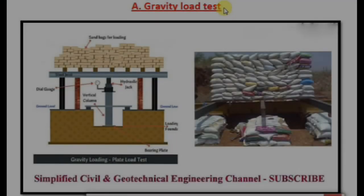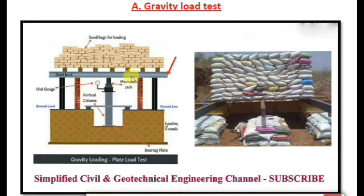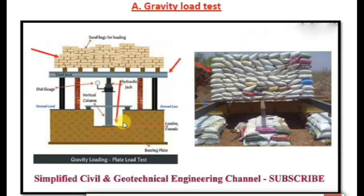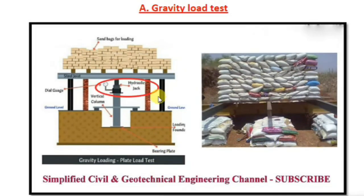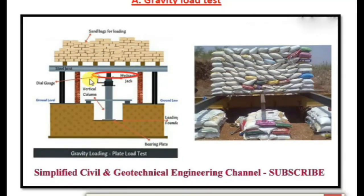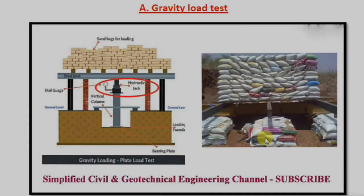Let's discuss in detail about the gravity load test. In gravity load test, a rigid platform is utilized to transfer the load through sandbags or concrete blocks. In case of gravity loading, sandbags are placed over this platform to transfer the load to the bearing plate. These blocks or sandbags act as a dead weight. A hydraulic jack is provided between the steel joist and the top of the vertical column to transfer the load on the bearing plate properly. The load needs to be applied gradually, hence the hydraulic jack is provided.